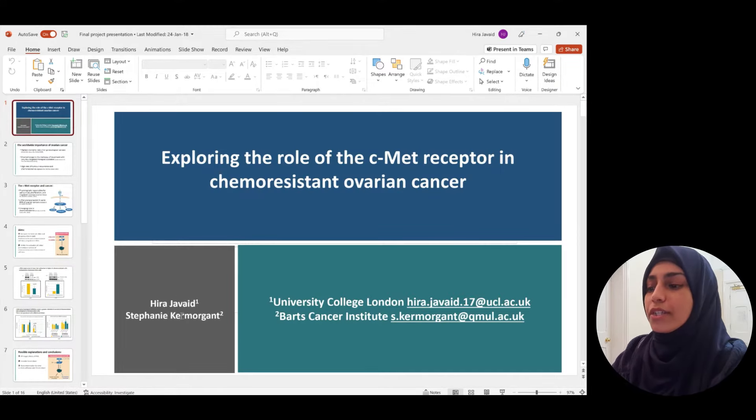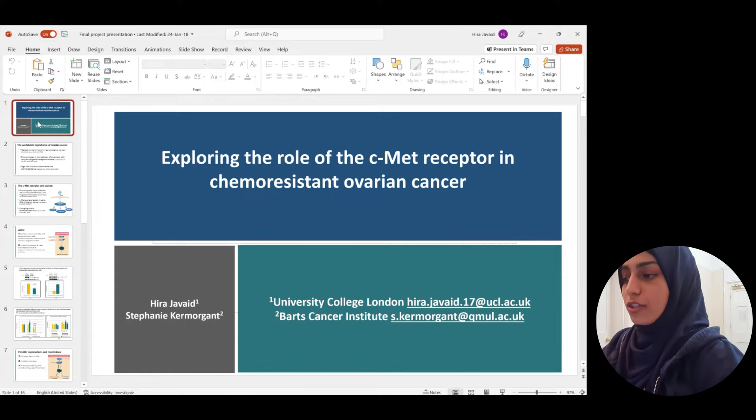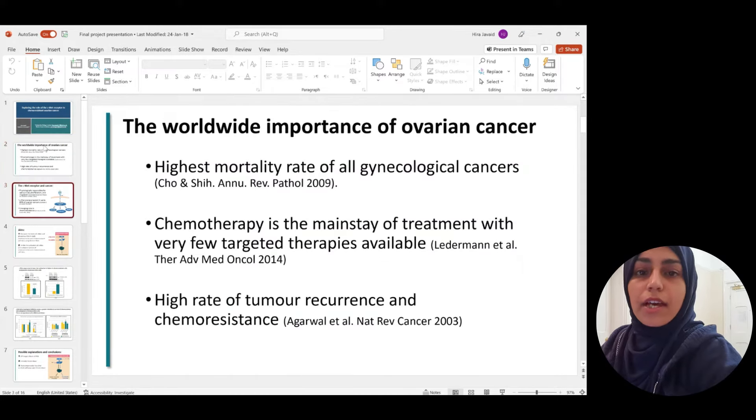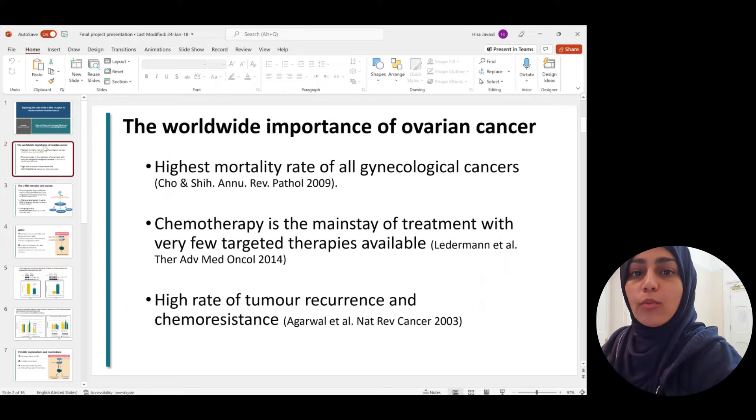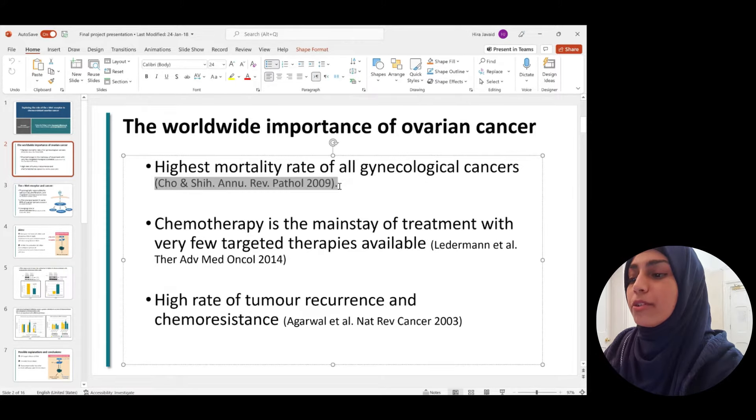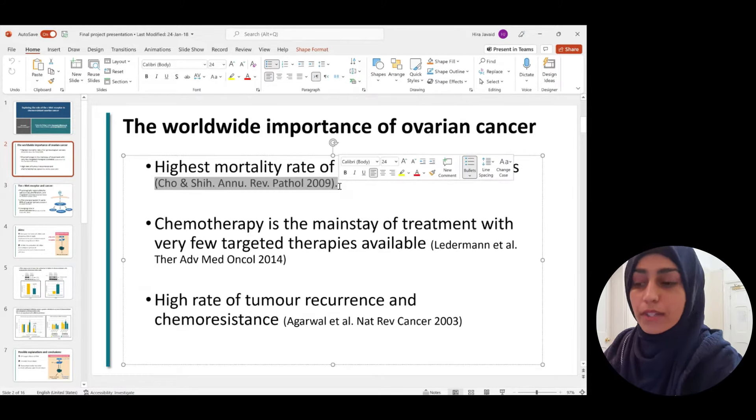Basically what I did was obviously have the title of the presentation. In the first two slides, I gave sort of a background to why my project was important, where it fit within the rest of the field. So we were talking about ovarian cancer, so I really wanted to show some key statistics of why ovarian cancer is so bad and how important it is to actually work on. And I also made sure that I put references like this on the slide. It just makes it more professional.